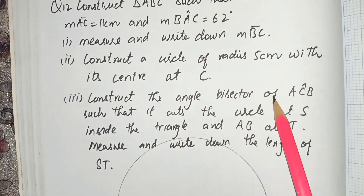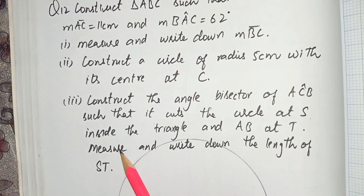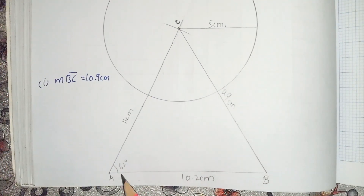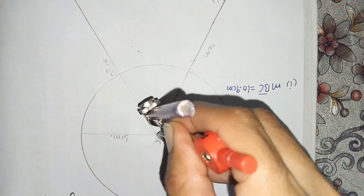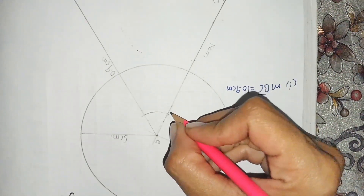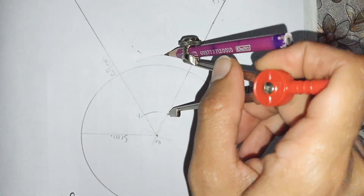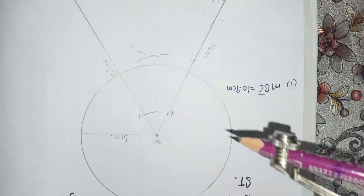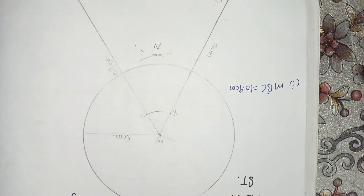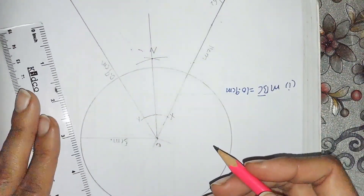Part number three: construct the angle bisector of angle C such that it cuts the circle at S inside the triangle and AB at T. Now we make the angle bisector of angle C. I open the compass to any suitable radius and draw an arc which cuts the lines AC and BC. I mark those points as X and Y. Place the compass at point X and draw an arc, then place at point Y and draw an arc. Where they cut is point Z. Now join C with Z — this is the angle bisector.